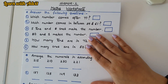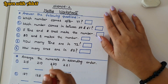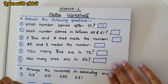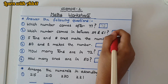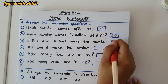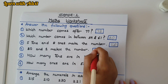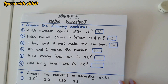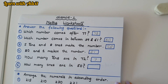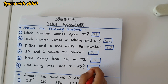Answer the following questions quickly. Which number comes after 77? 78. Which number comes in between 59 and 61? 60. Five 10s and eight 1s make which number? 58. 80 and 1 make which number? 81. How many 10s are there in 72? 7. How many ones are there in 50? Zero.